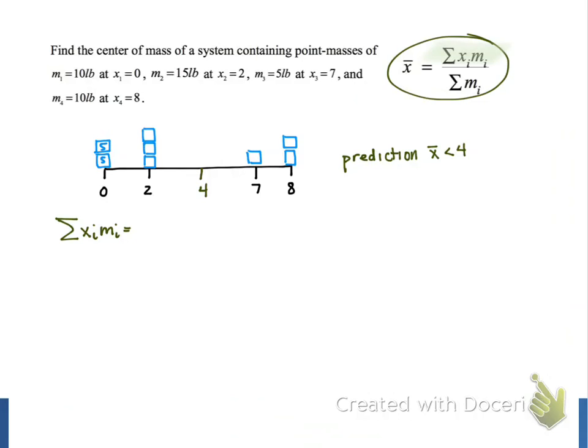Our first term is x1 equals 0 times m1 equals 10, then next we have 2 times 15, and then x equals 7 and 5 pounds, and then the last term is x equals 8 times 10 pounds. When we simplify this, we get 0 plus 30 plus 35 plus 80, and that numerator is equal to 145.